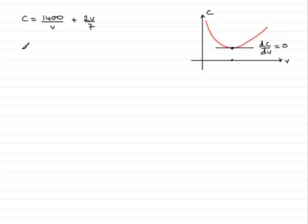So I'll take you through this. First of all, let's get this term here in a better form for differentiating. So this is 1400 times 1 over V, and 1 over V is the same as V to the power minus 1. And then for this one, we'll just leave it as two-sevenths V.